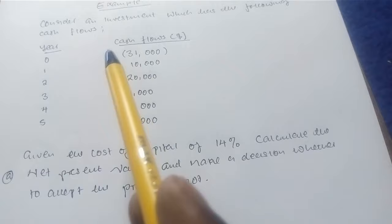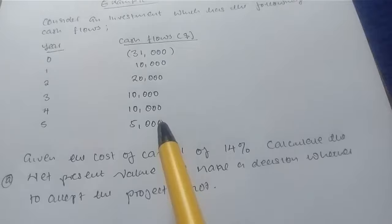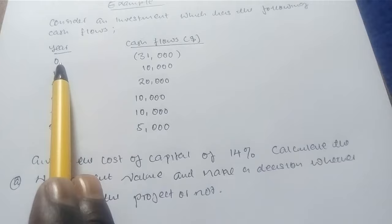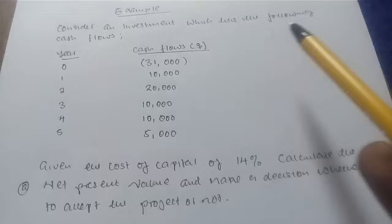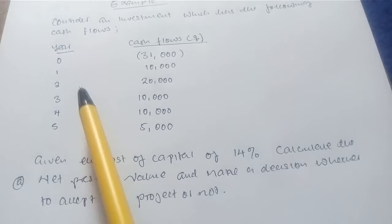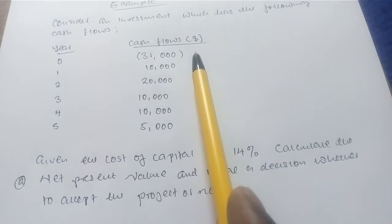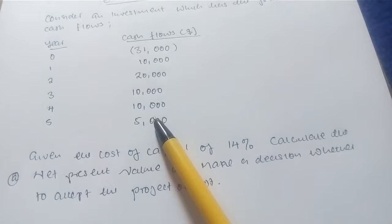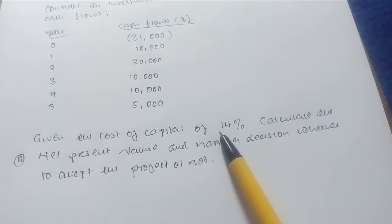Consider an investment which has the following cash flows. Year zero represents the initial investment — the money going out — so the brackets indicate it is an outlay, showing how much was spent on the project. Years one through five represent the expected cash inflows. For example, if we invested $1,000, in year one we expect a cash inflow of $10,000. The additional information given is that the cost of capital is 14%, and we must calculate the NPV and decide whether to accept the project.